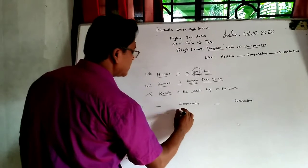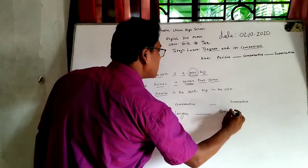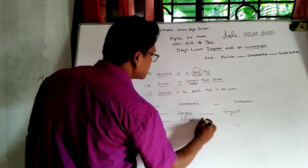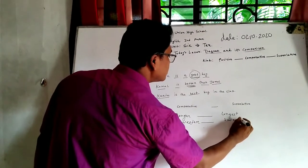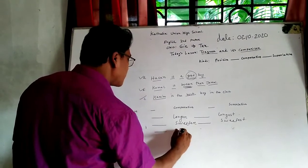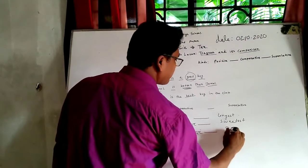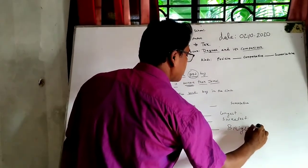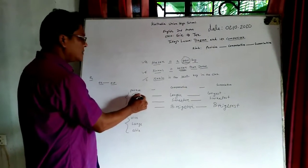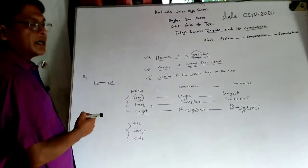For example: long → longer → longest. In the same way: sweet → sweeter → sweetest. Another word: bright → brighter → brightest. So we understand that if the word consists of only one syllable, we add -ER for comparative degree and -EST for superlative degree.